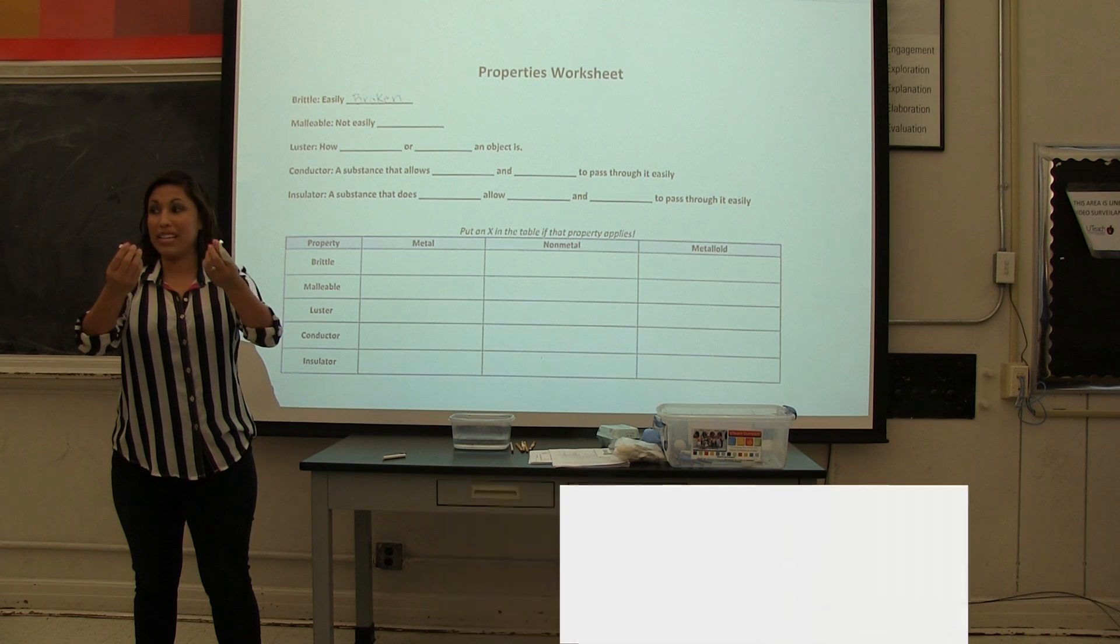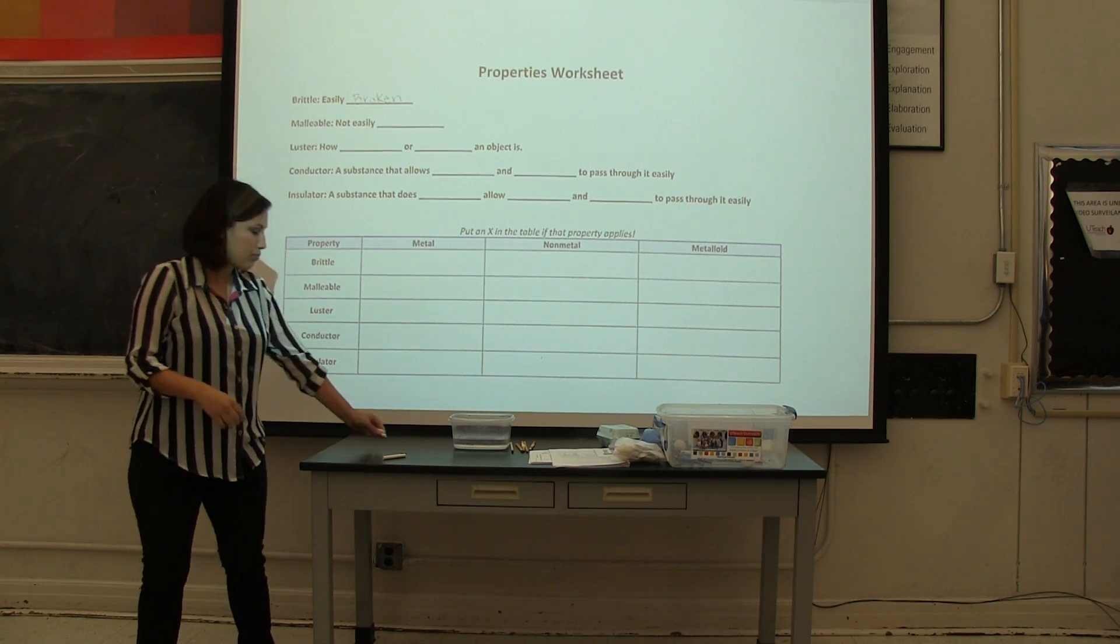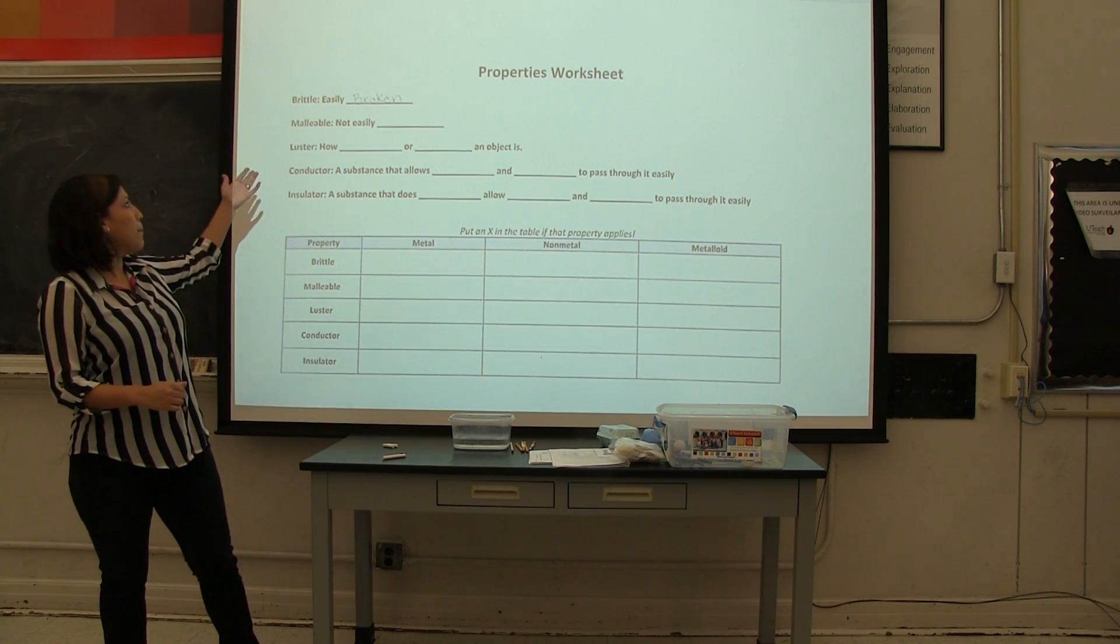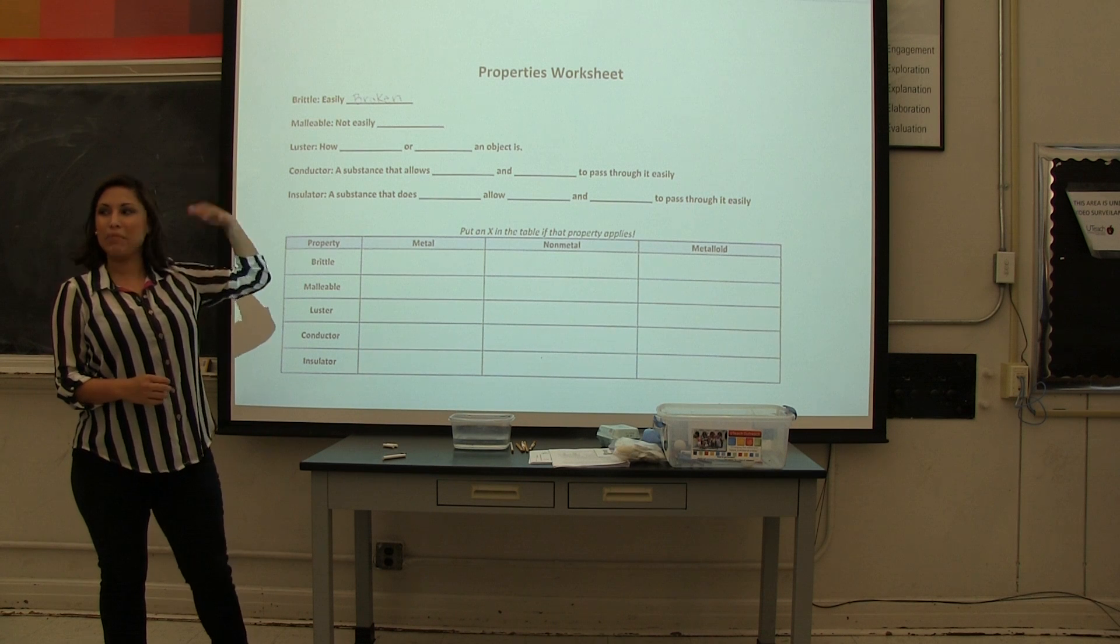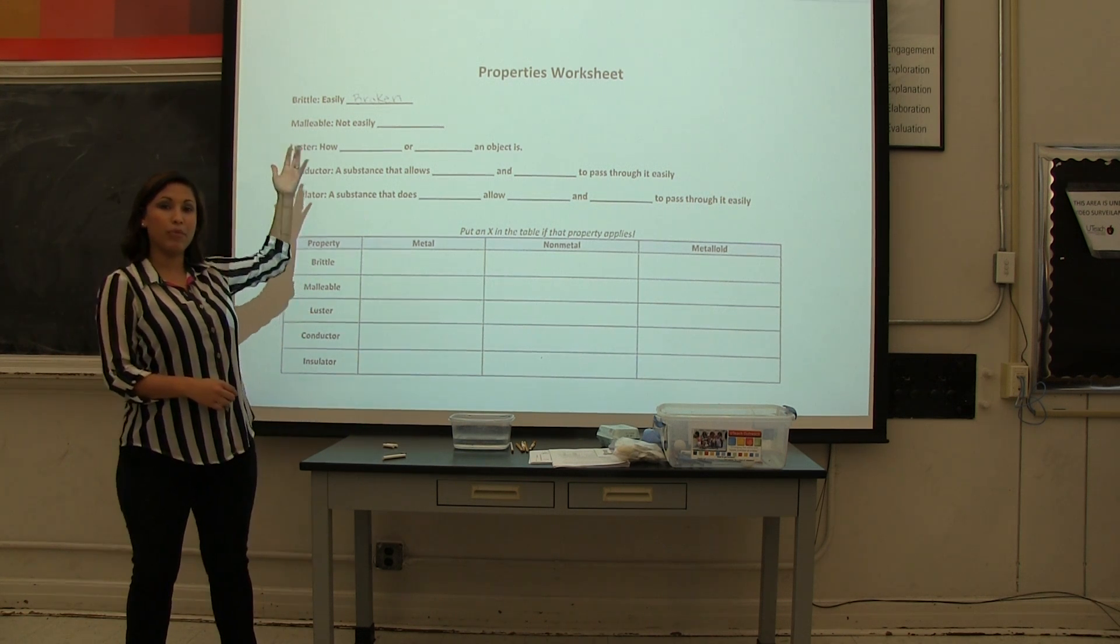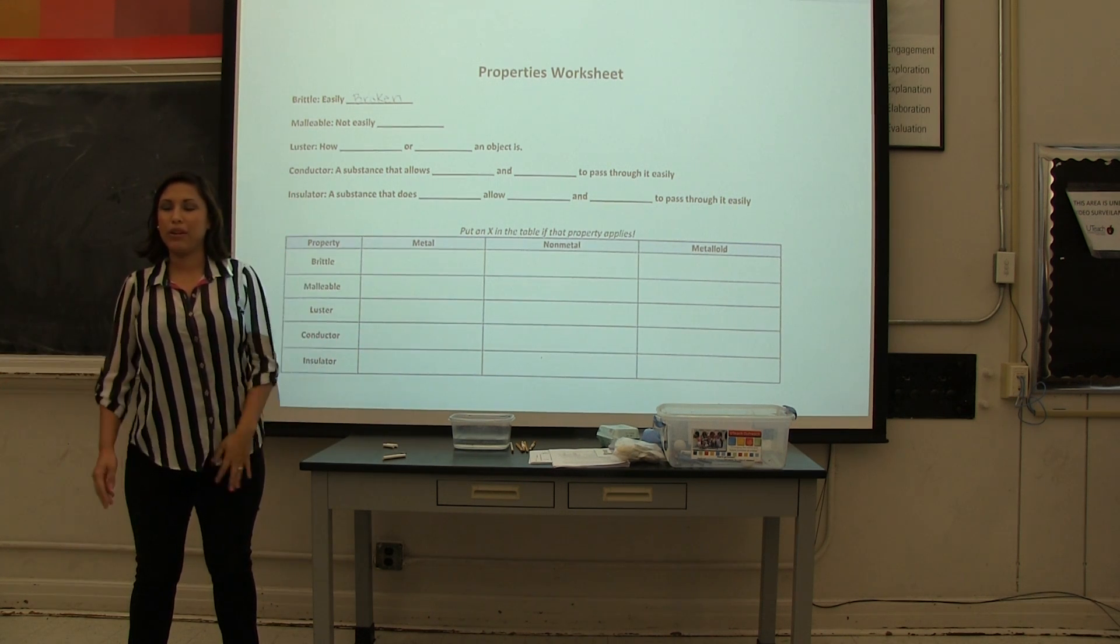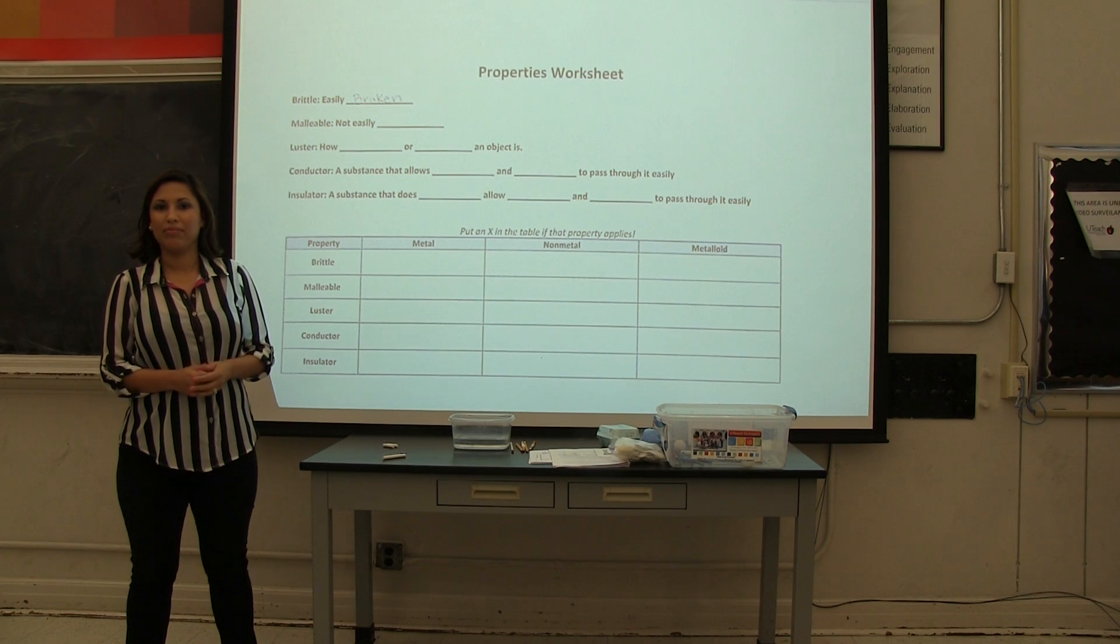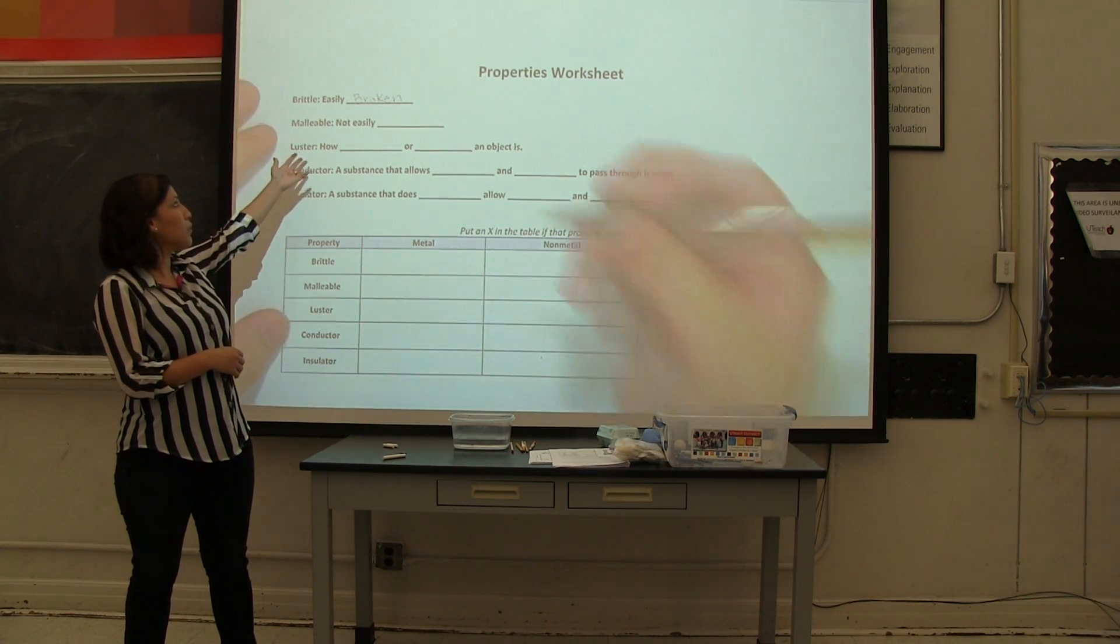All right, now that you have that written down, I'm going to give you an example. This piece of chalk here actually is an example of being brittle, so I can break it pretty easily without much effort. So what about malleable? If I said malleable was the opposite of brittle, what do you think that would be, Edward? Not easily broken. Very good. So go ahead and write that on your worksheets.